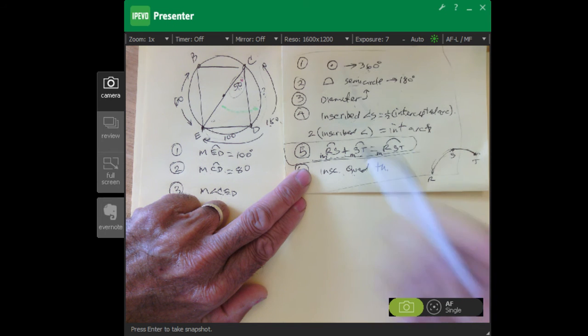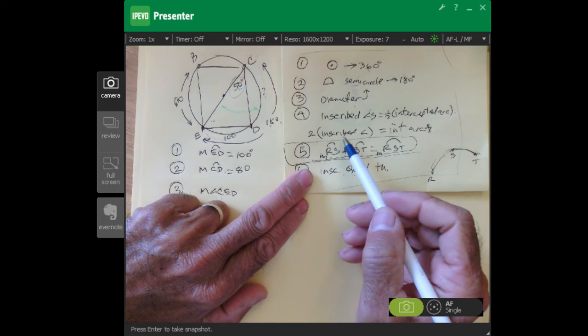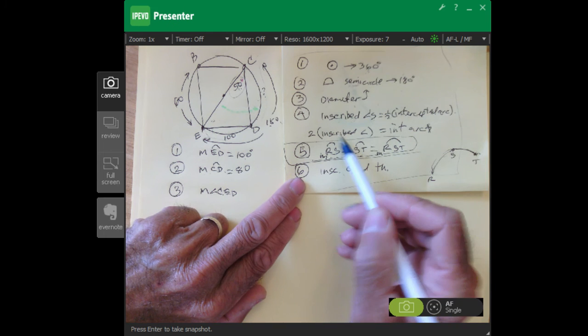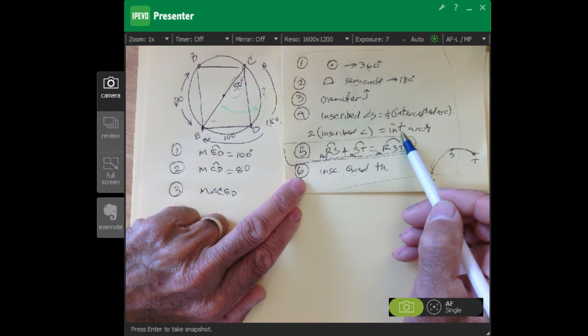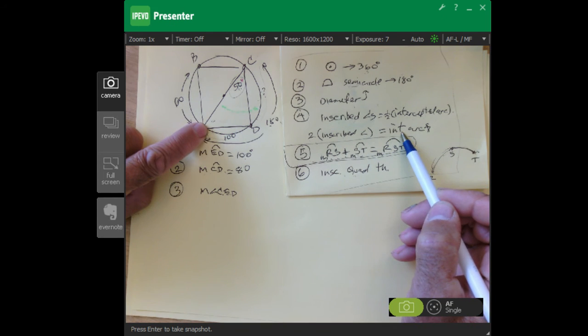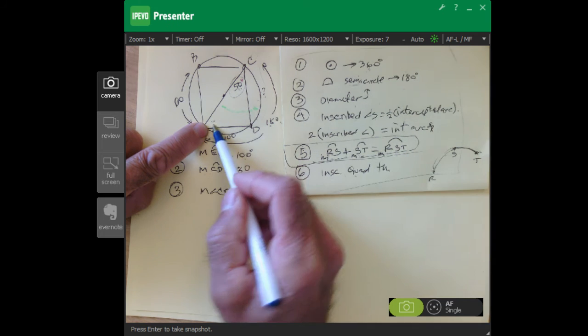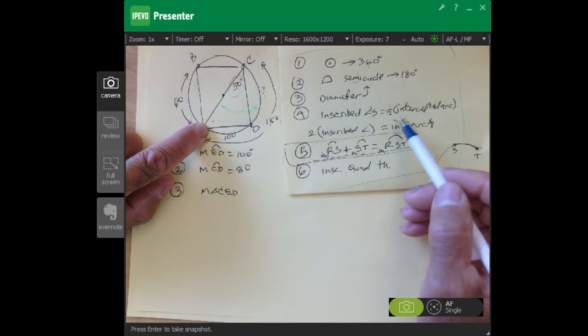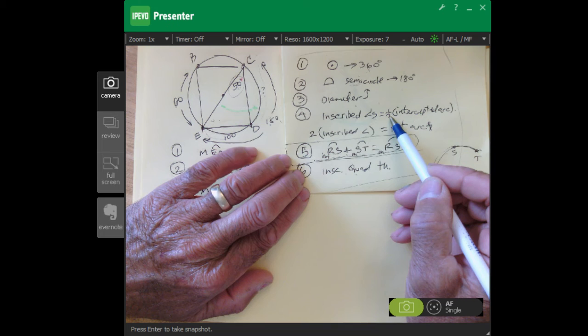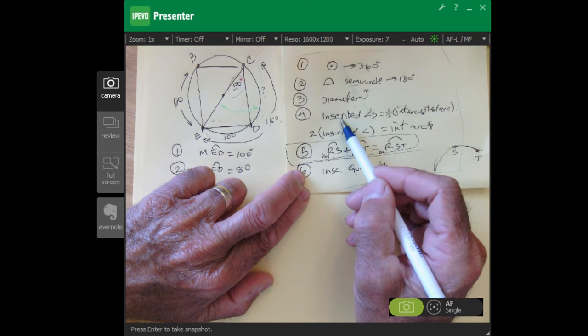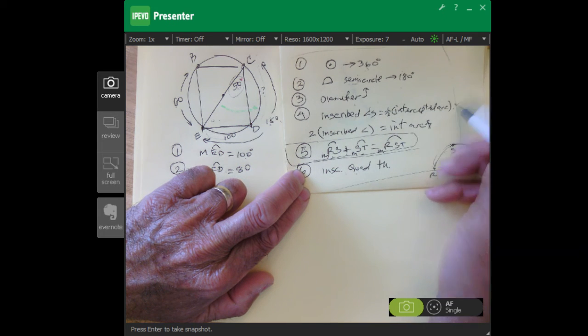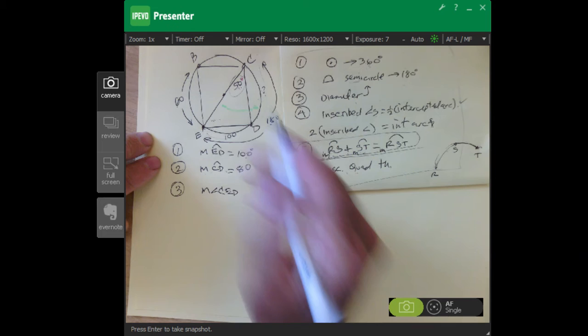If we take the inscribed angle and multiply by two, we get the intercepted arc. We can't use this because we don't have the inscribed angle. However, if we take the intercepted arc times one-half, we get the inscribed angle. So this is the one we're going to use right here.